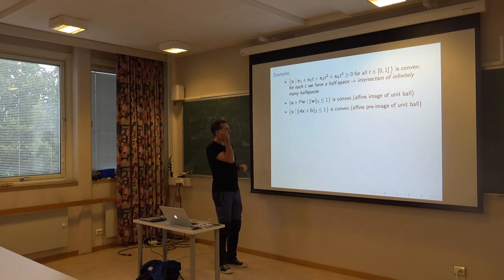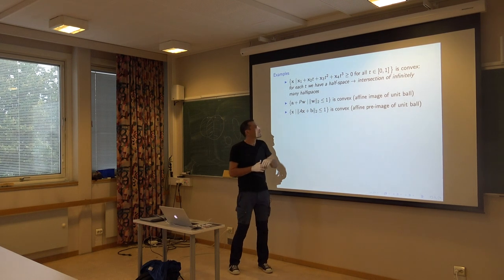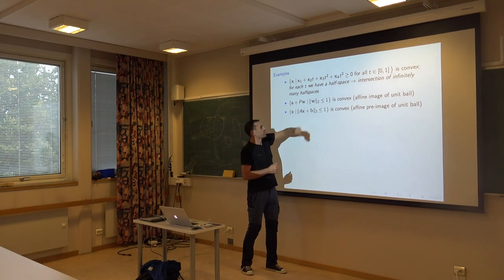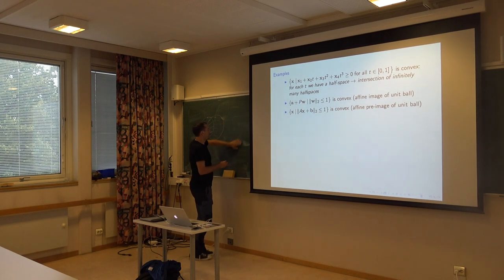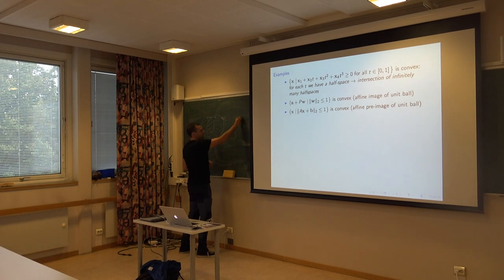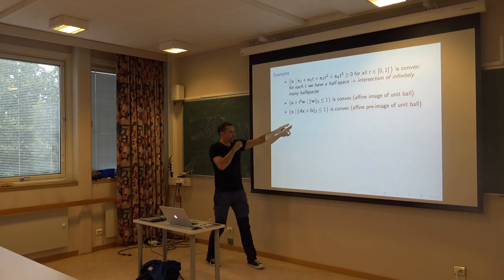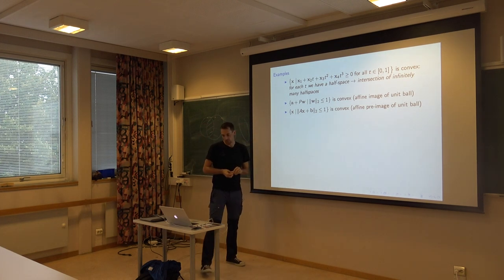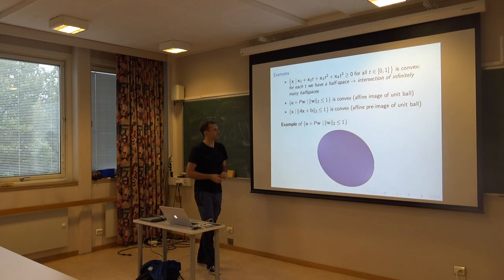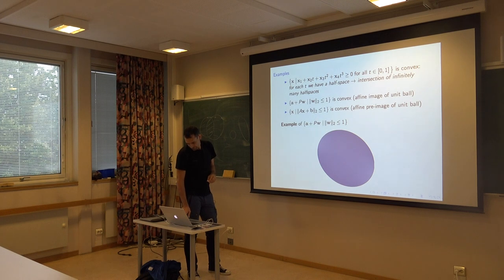A few more examples. The two-norm of W — that's a ball on W — is convex. If you build a ball and take an affine transformation, you get a convex set. And vice versa: if you want A*x + b to be inside that ball, the set of x that respects that is also convex. That's a transformation of the ball — it could be ellipsoidal, for example.